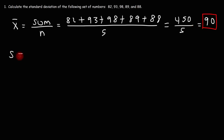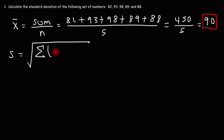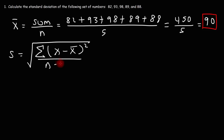Now the formula that we're going to use to calculate the standard deviation is this formula. We're going to take the difference of each x value and the mean, then square those differences and take the sum of those squares. And then we're going to divide it by n minus one. Let me show you how to do that.